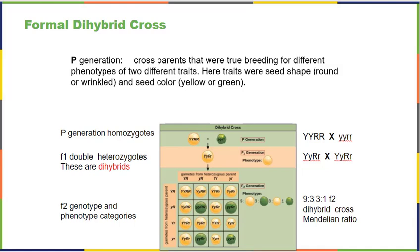In this case, we're tracking a yellow round seed — big Y, big Y, big R, big R — and mating it with a green wrinkly seed — little y, little y, little r, little r. That's the P generation. Every offspring is going to be big Y, little y, big R, little r, because that's the only option. Every baby gets one big Y from mom and one little y from dad, one big R from mom and one little r from dad. That one's easy.